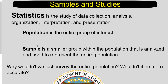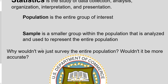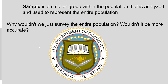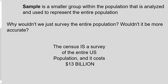So you would use a sample — a smaller group within the population that is analyzed and used to represent the entire population. You choose a much smaller group, find their average height, and depending on how you selected that sample, you can draw conclusions about the bigger group. It works with surprising success as long as we follow certain steps. A lot of times the population is just too big to survey entirely. If you do survey the entire population, it's called a census. The US Department of Commerce does this once every ten years.